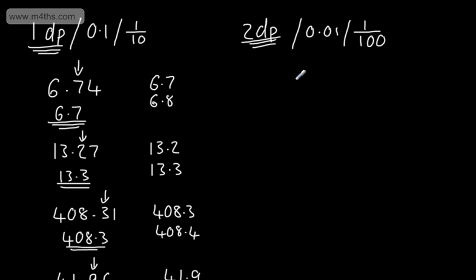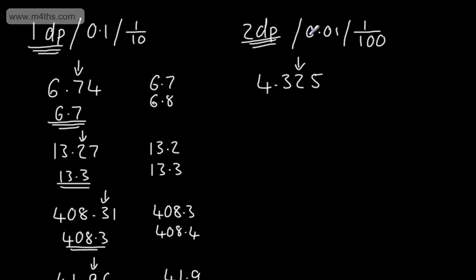So let's take a number — I'm going to have 4.325. This is the number we're interested in, the one that's going to potentially change. This is the second decimal place, in the one-hundredths column, or 0.01.